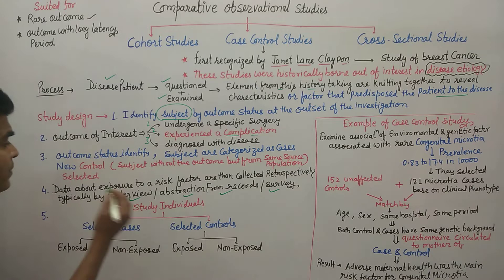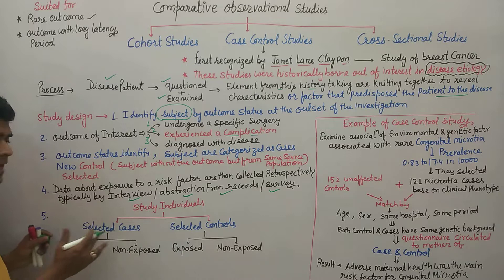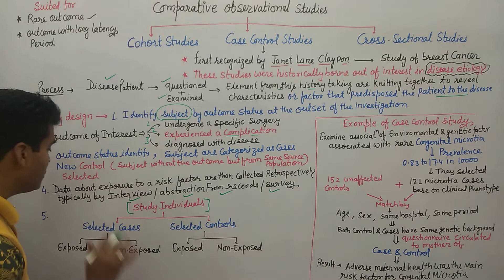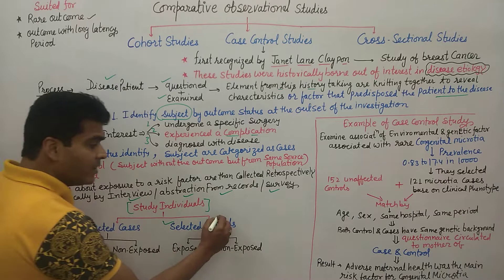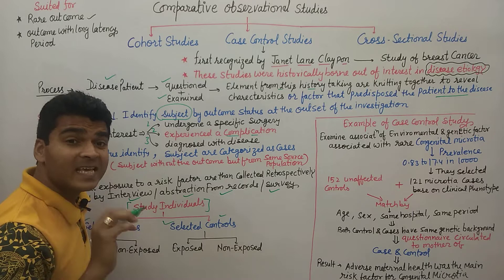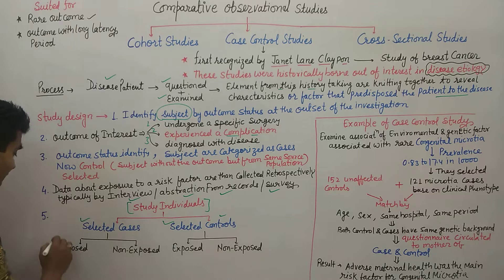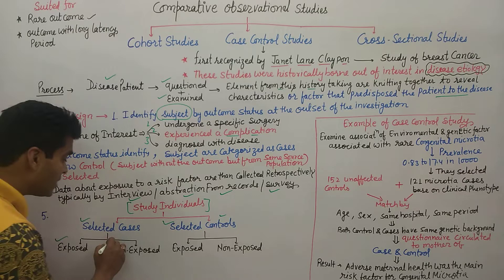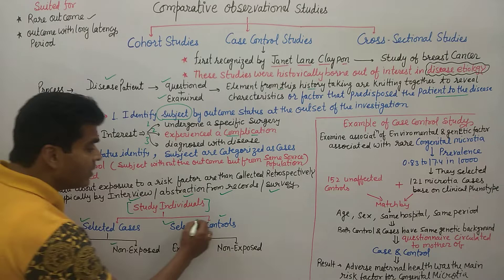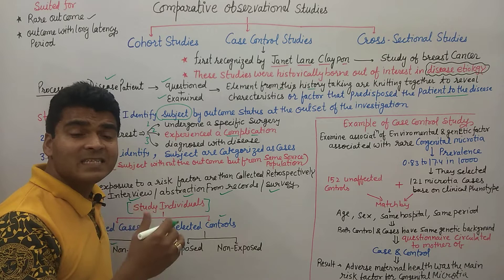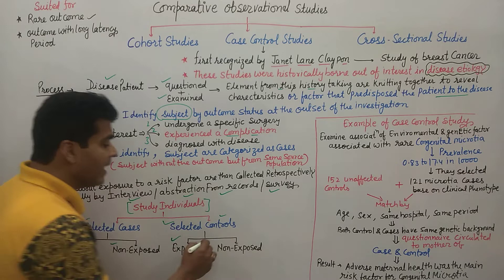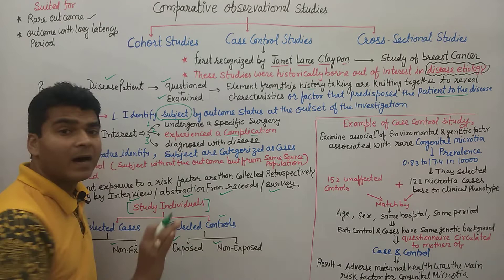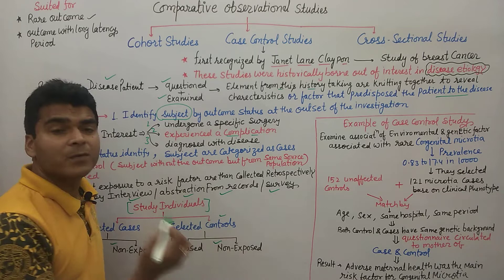In the study design, individuals are divided into selected cases and selected controls — cases are those with the disease, controls are those without the disease but from the same area. Among cases, some are 'exposed' (had the condition that could cause disease) and some are 'non-exposed.' Similarly, controls are divided into exposed and non-exposed groups.